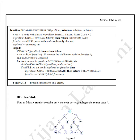Breadth first search returns either a solution or a failure. Initially, if the node passes the goal test, we return the solution. If it is not a goal node, we add it to the frontier FIFO queue and expand that node.